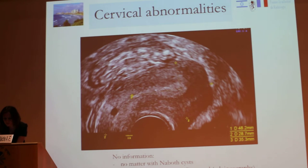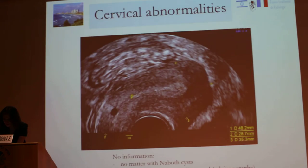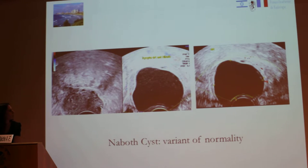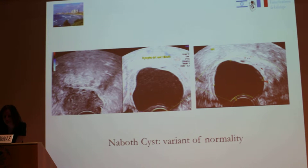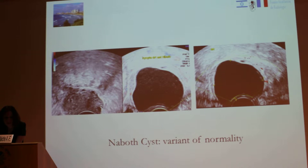Here you have an example of ultrasound imaging. There is an example of Nabothian cysts, and it is not a problem — it is not a cause of infertility. We can note there is a stenosis of cervical structure, but that is not a problem. MRI and ultrasound are not good exams to explore cervical stenosis.